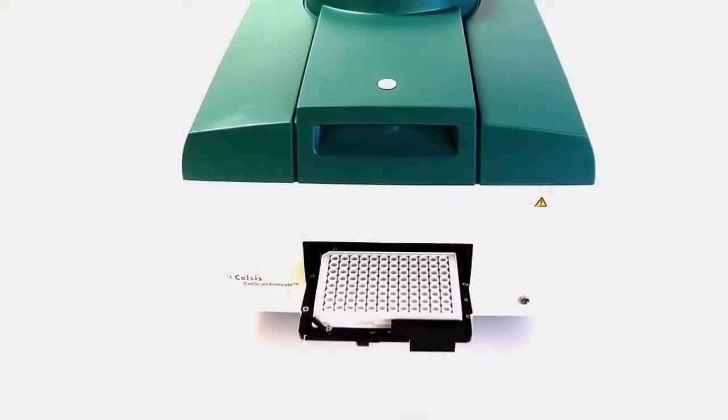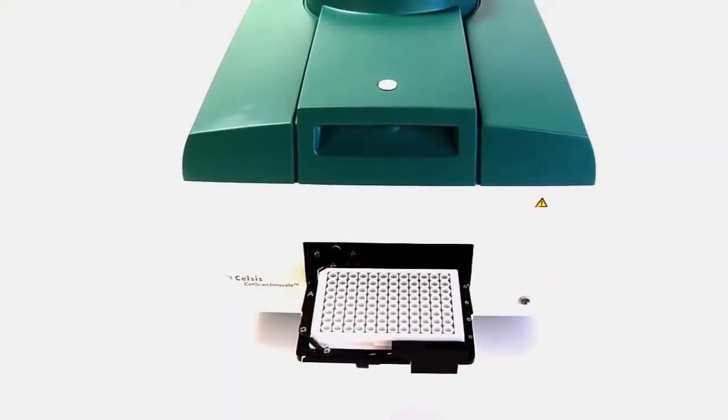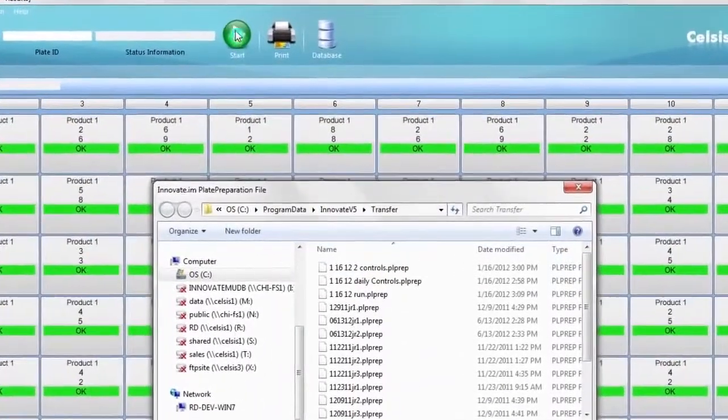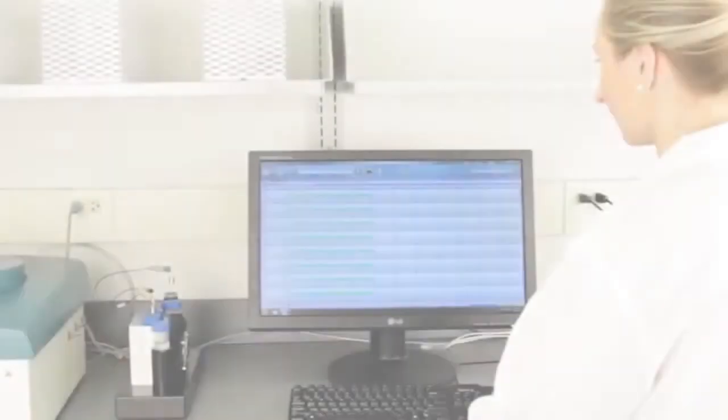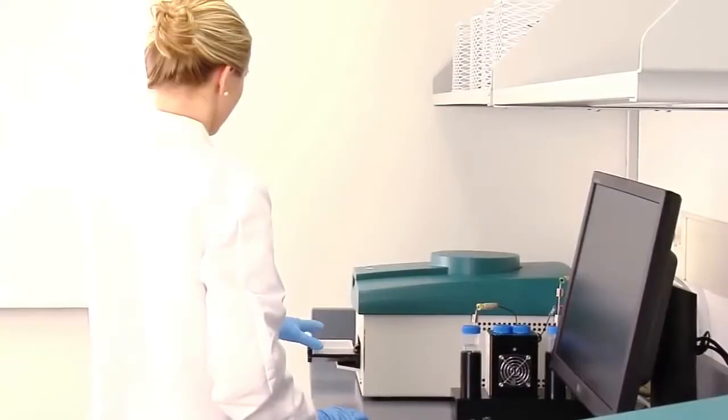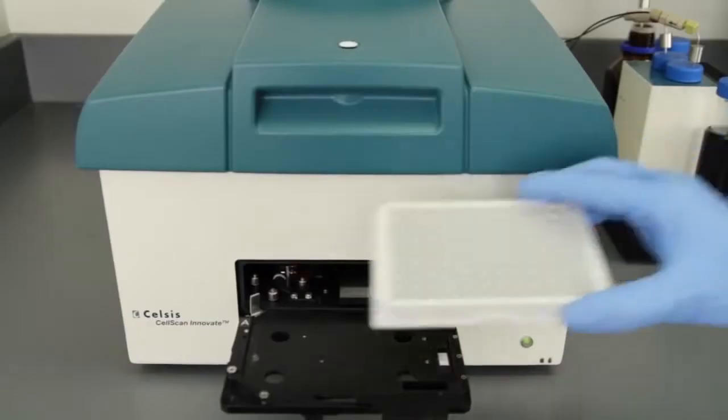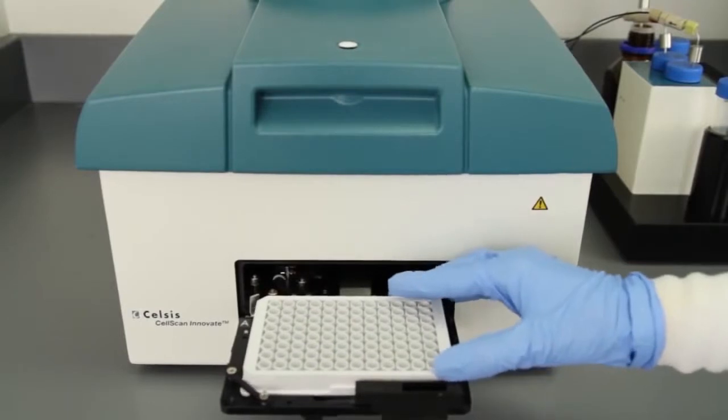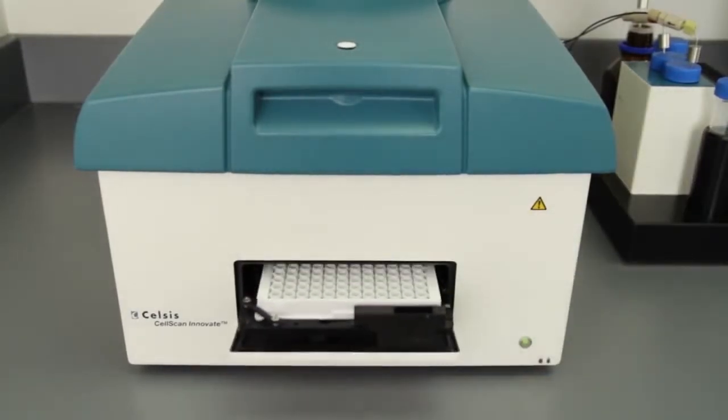And the Celsis Innovate system is ready for more. Return to the main screen and click Start. Identify and select the plate you recorded and saved earlier, or enter a new one. The Innovate will automatically unload the previous plate, allowing you to use any remaining wells of that plate, or to load a new one.